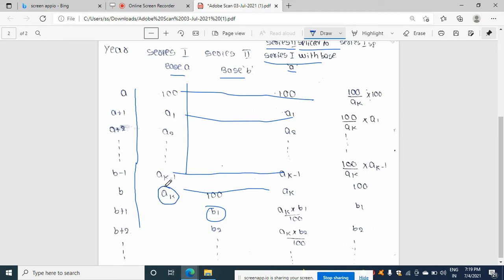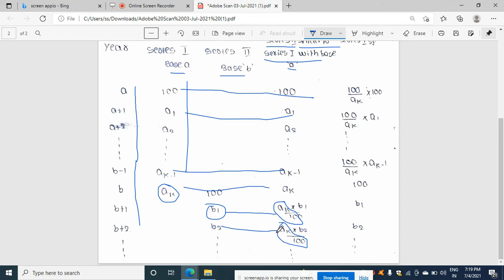See here, A_K divided by 100 is common. Suppose I am doing this particular line, I will multiply with B1. Again, A_K divided by 100, I am doing this particular line calculation. So I will write B2. Like this, it will go on, students.